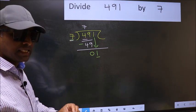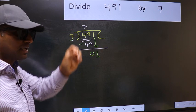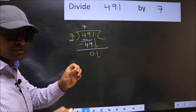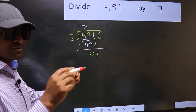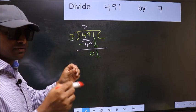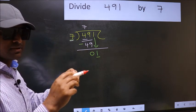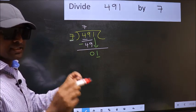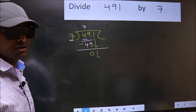I repeat: bringing the number down and also putting dot and taking 0 — doing both at the same step — you should not do.